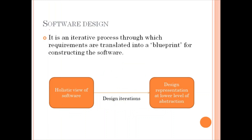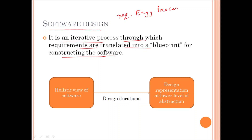Software design is an iterative process through which requirements are translated into a blueprint for constructing the software. As we know, the requirement engineering process provides us one requirement specification document, that is SRS. So software design translates that requirement into a blueprint.